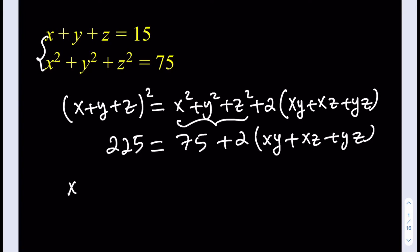Divide by 2. And you're going to get xy plus xz plus yz to be 75 as well.